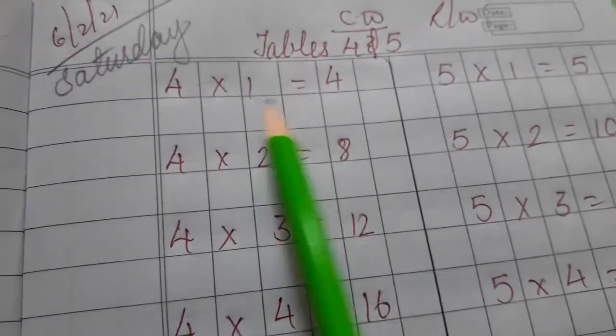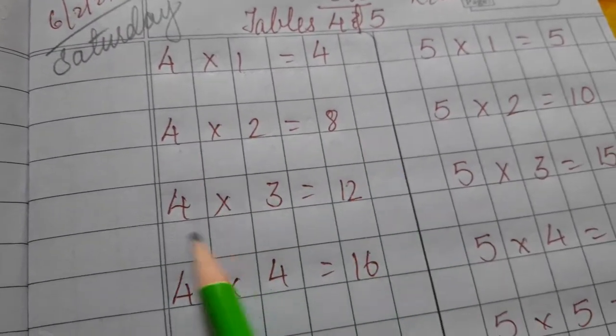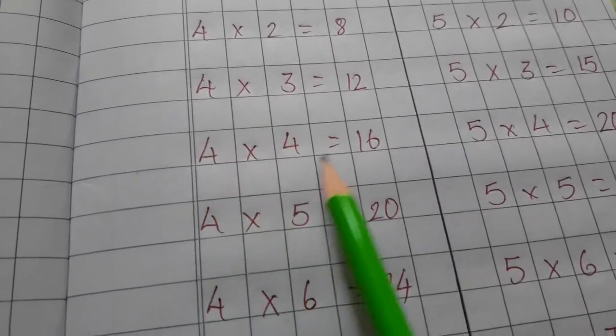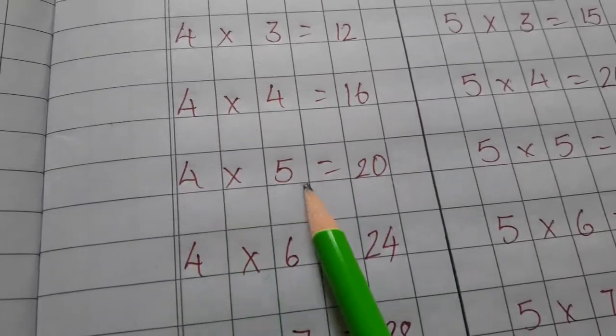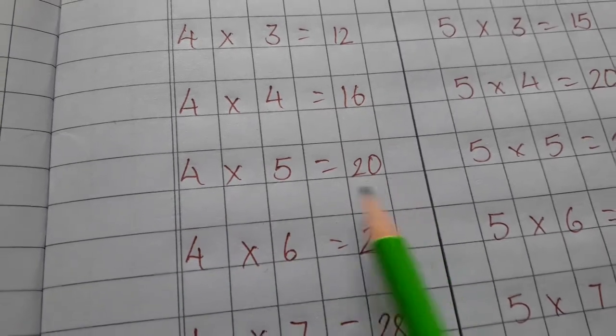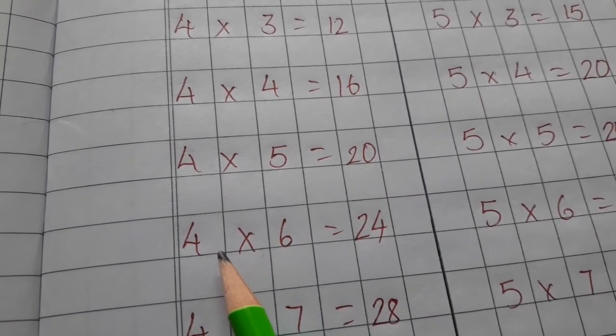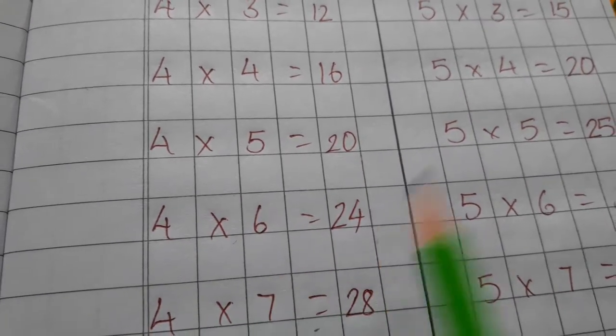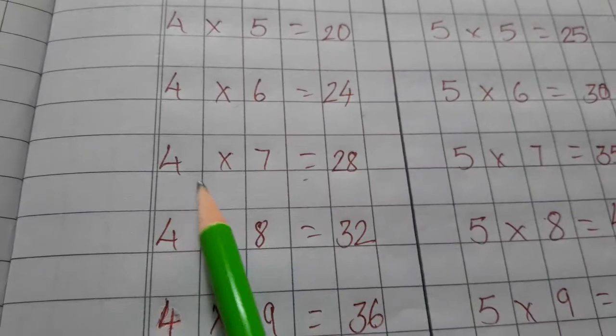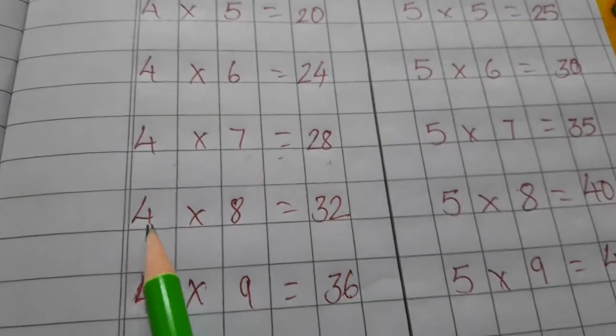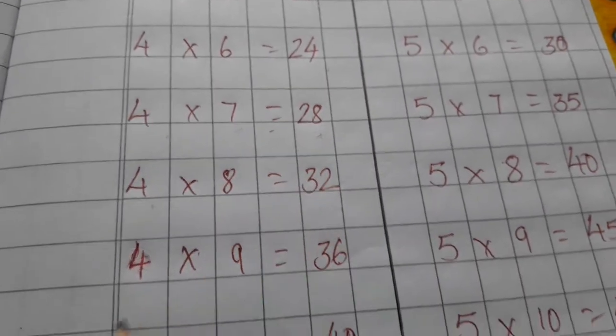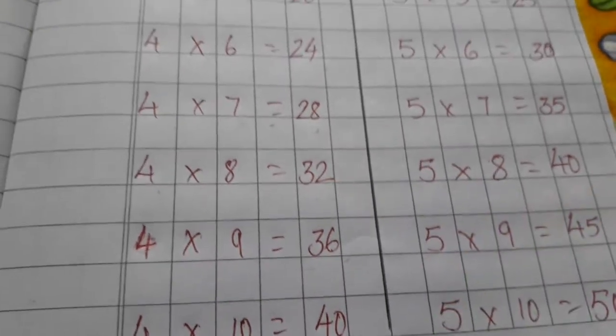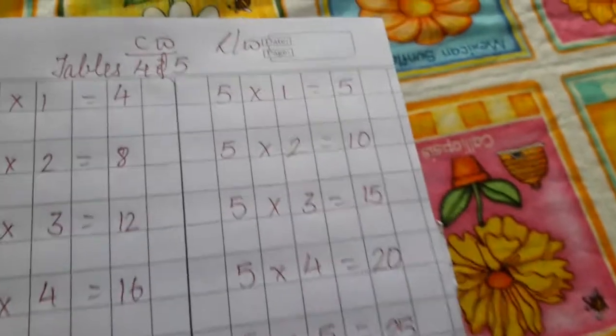4 ones are 4, 4 twos are 8, 4 threes are 12, 4 fours are 16, 4 fives are 20, 4 sixes are 24, 4 sevens are 28, 4 eights are 32, 4 nines are 36, 4 tens are 40.